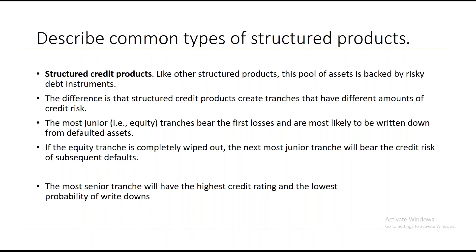The most junior tranches bear the first loss. Any credit loss to the pool is first borne by the equity tranche, which is most likely to be written down from defaulted assets. Once the equity tranche is completely wiped out, further credit losses impact the junior tranche next. Naturally, the most senior tranche will have the highest credit rating and the lowest probability of write-downs.